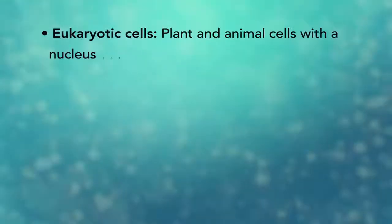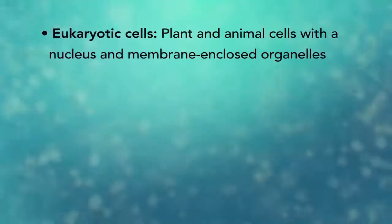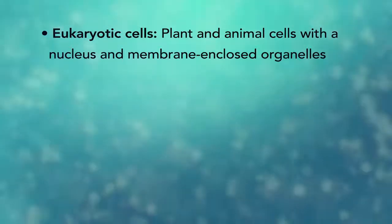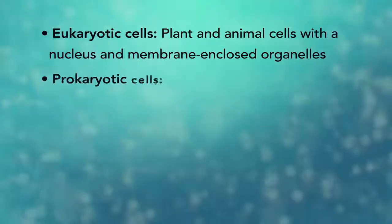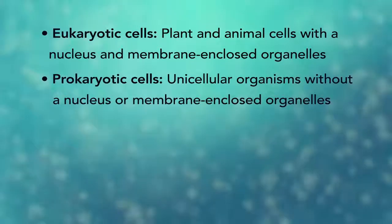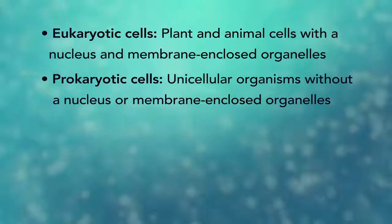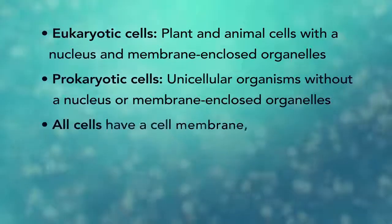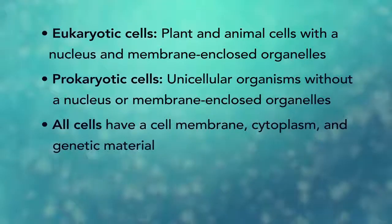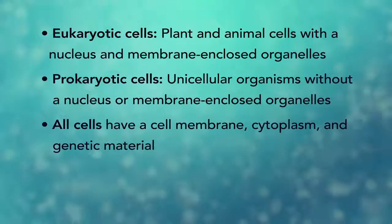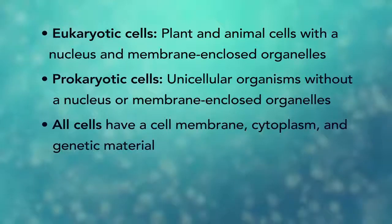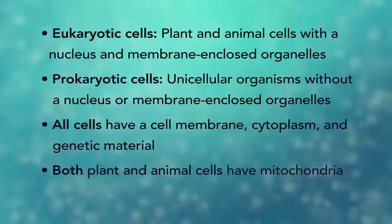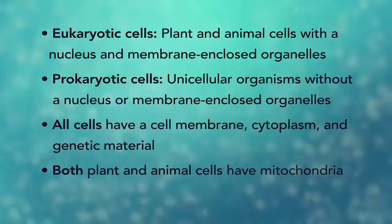In summary, eukaryotic cells are plant and animal cells with a nucleus and membrane-enclosed organelles, while prokaryotic cells are unicellular organisms without these things. All cells have a cell membrane, cytoplasm, and genetic material. And even though only plant cells have chloroplasts, both plant and animal cells have mitochondria.